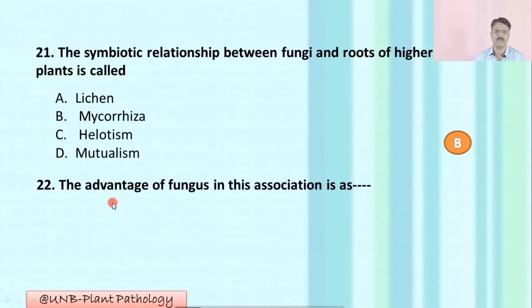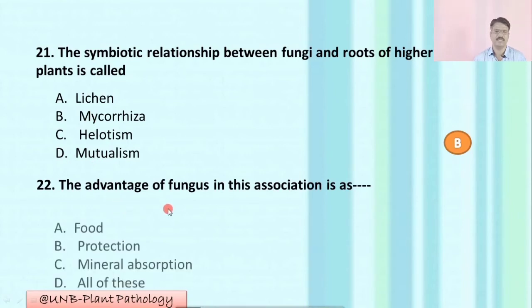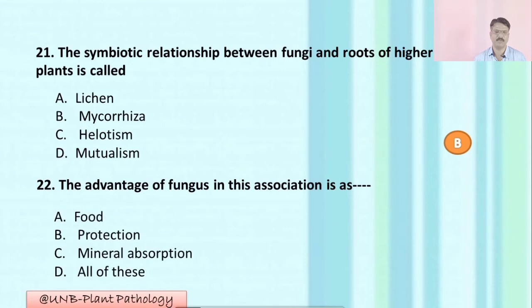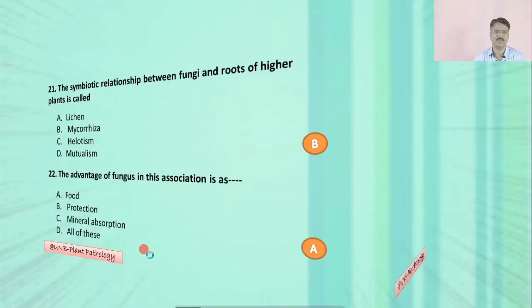Question number twenty-two: The advantage of fungus in this association is — A: food; B: protection; C: mineral absorption; D: all of the above. The correct option is A: food.